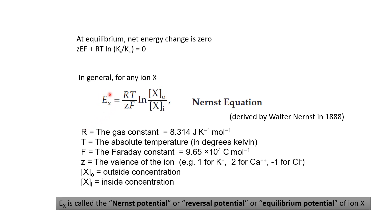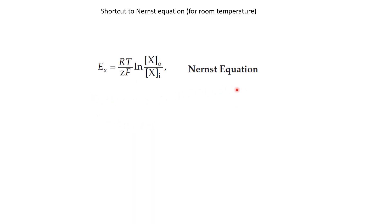The value of potential obtained from the Nernst equation is the equilibrium potential, also sometimes called the reversal potential or the Nernst potential, for the particular ion being considered. For potassium, we get a particular value by putting in potassium concentrations and its charge. We might get a different value for sodium and a different value for chloride — so each ion has its own equilibrium potential.